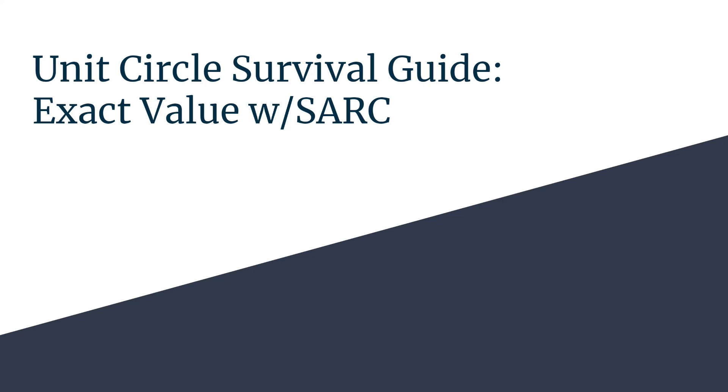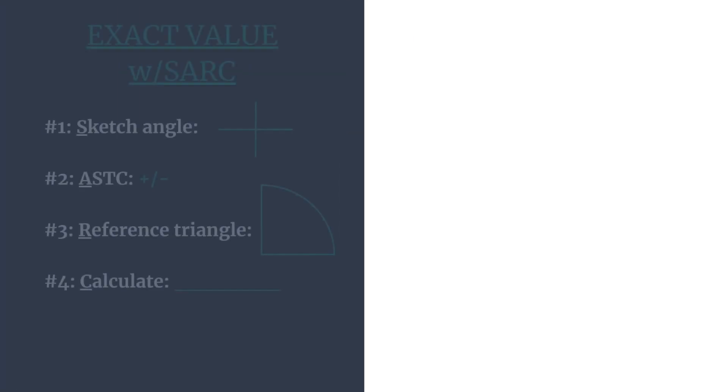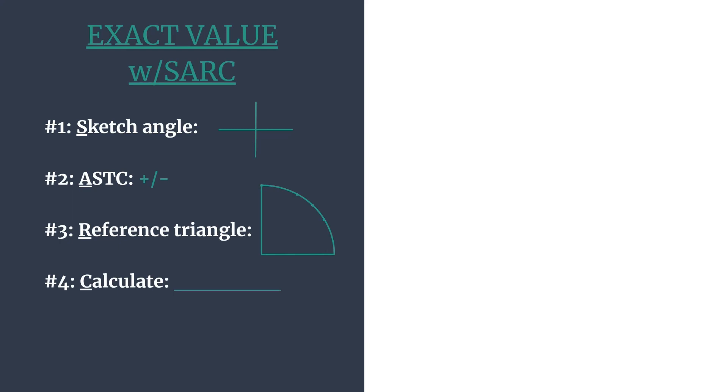In this unit circle survival guide, we'll find the exact value of the cosine of 19 pi over 6 using SARC. So SARC is just an acronym for our method to find an exact value, and you can see here's our template.